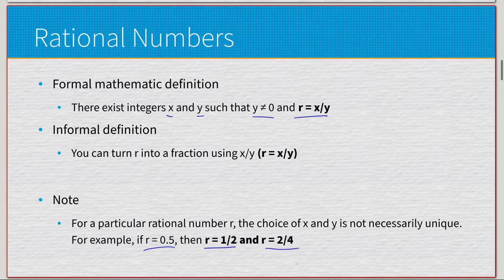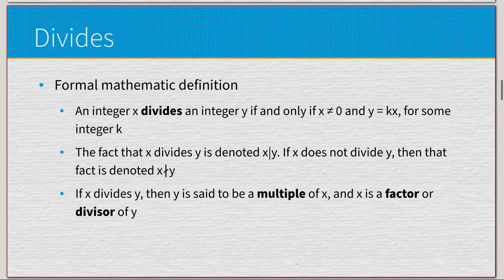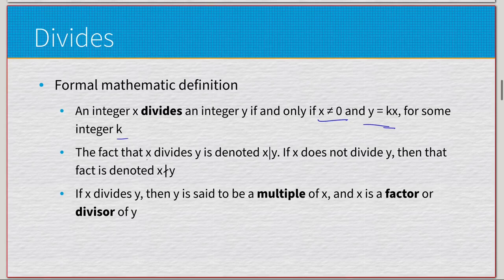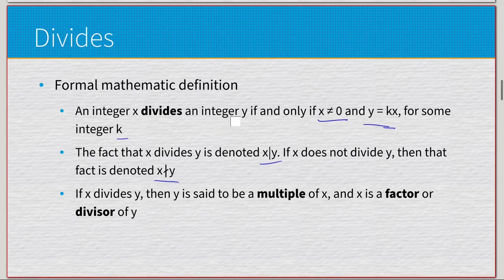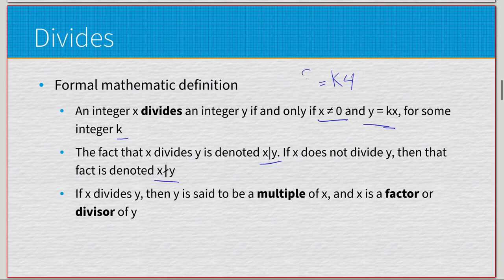Division will be used as a precursor to another definition. Formally: an integer x divides an integer y if and only if x ≠ 0 and y = kx for some integer k. We write 'x divides y' as x|y; if x does not divide y, we write x∤y. If x divides y, then y is a multiple of x and x is a factor or divisor of y. Example: 4 × 2 = 8, so 4 divides 8.